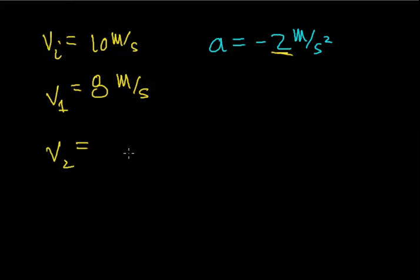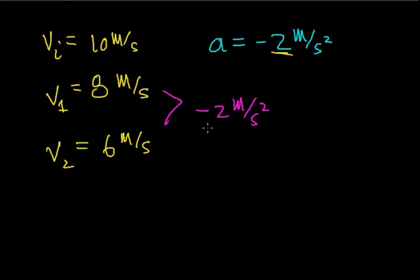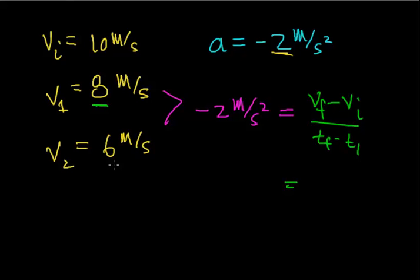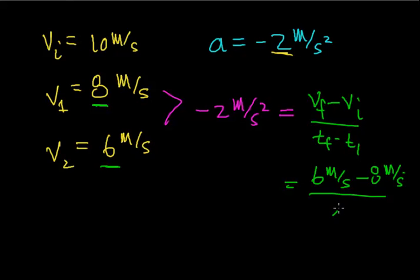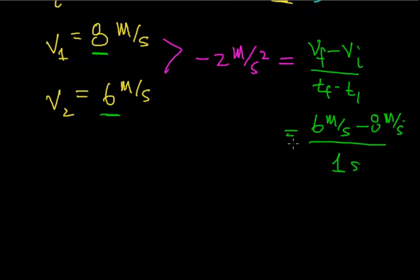After 1 more second, the velocity goes from 8 meters per second, slowing at 2 meters per second per second, to 6 meters per second. Again, a change in velocity of negative 2 meters per second every single second, or negative 2 meters per second squared. We get this from the definition of acceleration — change in velocity per change in time: 6 meters per second minus 8 meters per second over 1 second equals negative 2 meters per second squared.